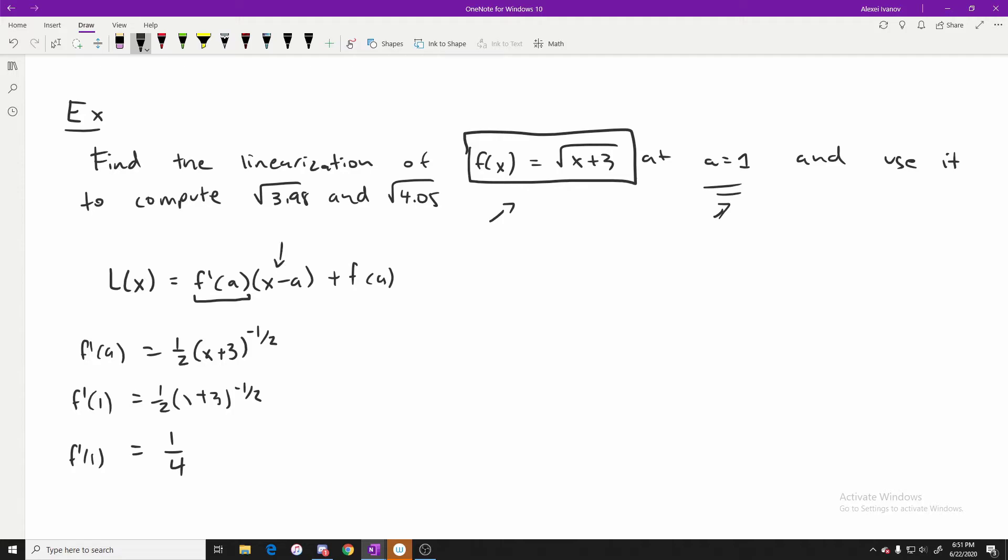Now this right here would equal to one fourth and now we have found our f'(a). And this right here is pretty obvious, there's no really need to compute that. The last thing left to compute is f(a). So f(1) would equal to just the square root of 1 plus 3, which is the square root of 4, which is two. So now we've computed all the values and all that's left to do is plug them in.